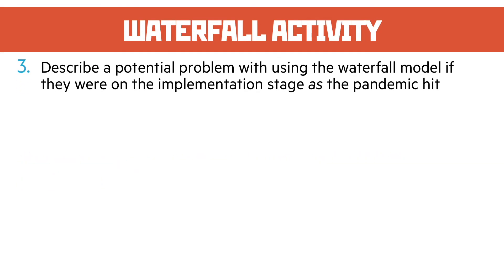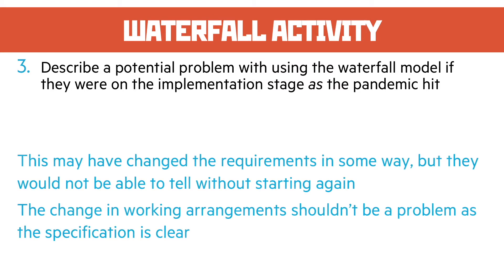Question three: describe a potential problem with using the waterfall model if they were on the implementation stage as the pandemic hits. That's quite interesting because that was something that people didn't expect to happen. A problem as a result is that it's bound to have changed the requirements in some way, but they're going to be unable to tell that without going back and starting the waterfall process once again.